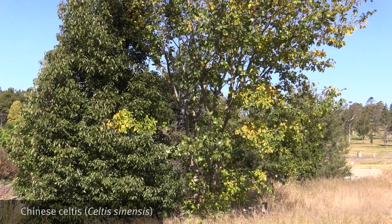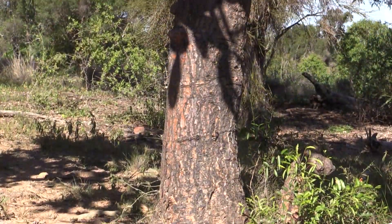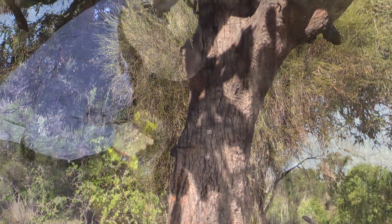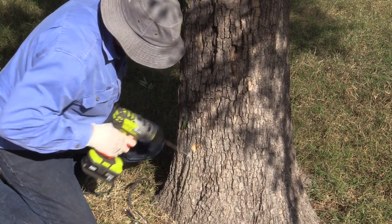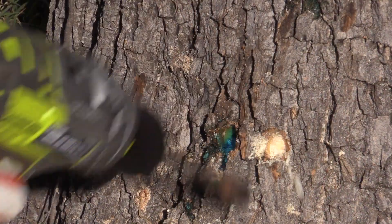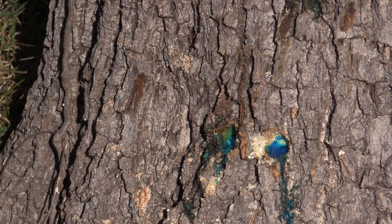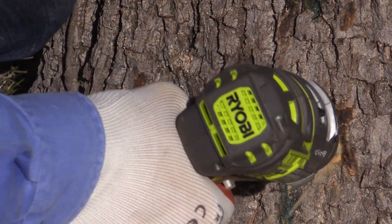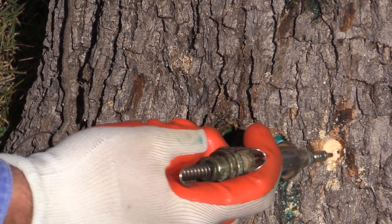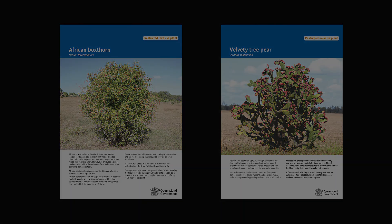The drill and frill method is used for trees and woody plants with stems and trunks greater than 5 centimetres in circumference. This method uses a battery powered drill to drill downward angle holes into the sapwood approximately 5 centimetres apart. A syringe is then used to deliver measured doses of herbicide solution within 15 seconds. See relevant species fact sheets for the appropriate herbicide and treatment options.